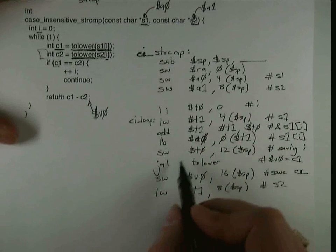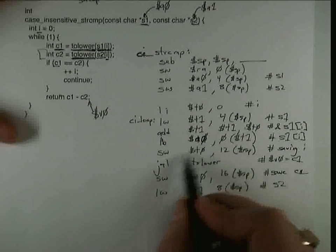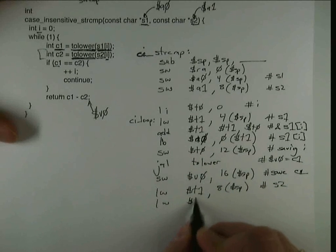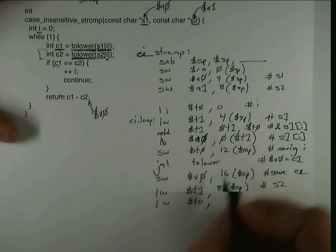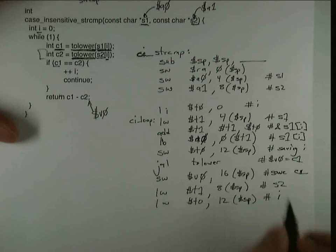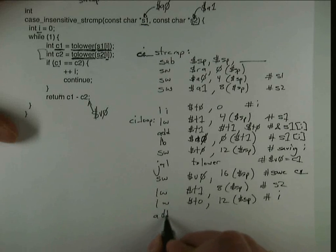In this case, I don't have I in a register. Since this killed T0, I have to load I again. So I'm going to load T0, I is in the 12 offset of the stack pointer. That gets me I back.